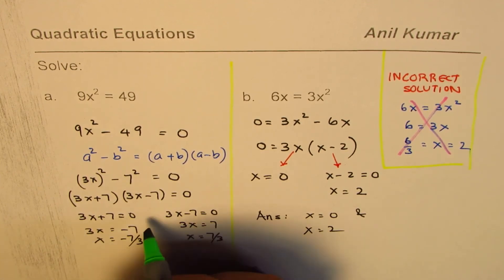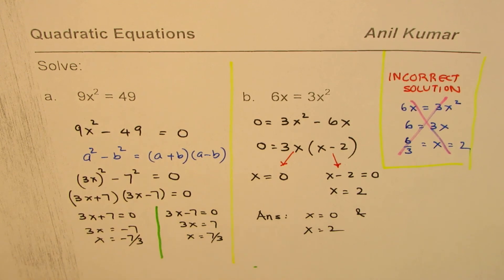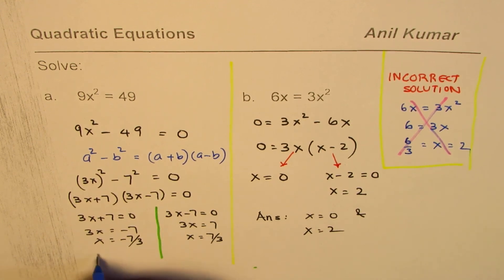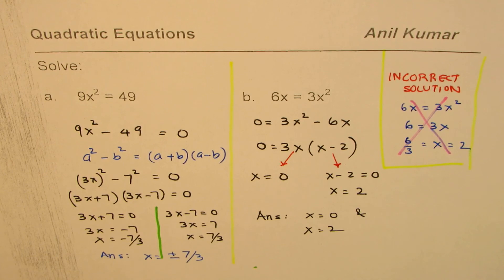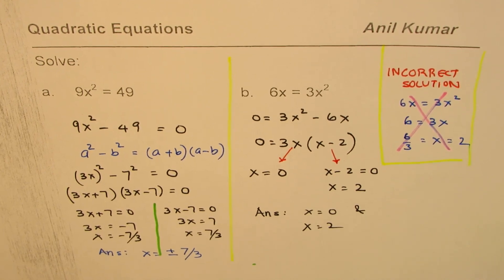So that is how we get two solutions for the given equation. And so the answer for this one is that x equals to plus or minus 7 over 3. So that is how you should be solving such equations. I'm Anil Kumar and I hope that helps. Thank you and all the best.